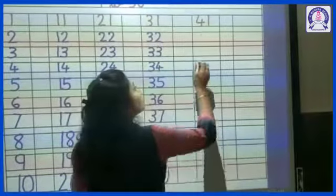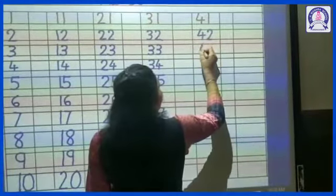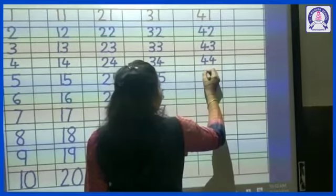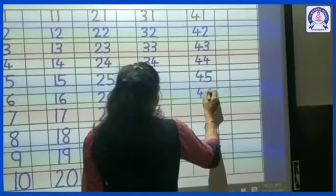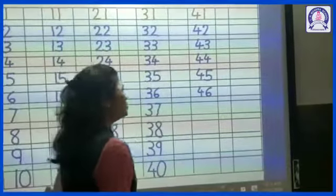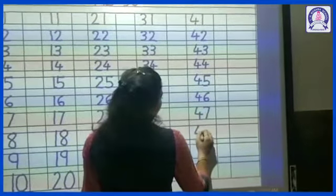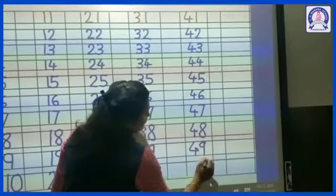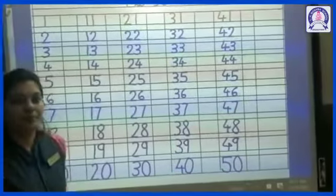41. 41 is already written. 42, 43, 44, 45, 46. Speak and write. If you don't have any numbers, skip it. 47, 48, 49, 50.